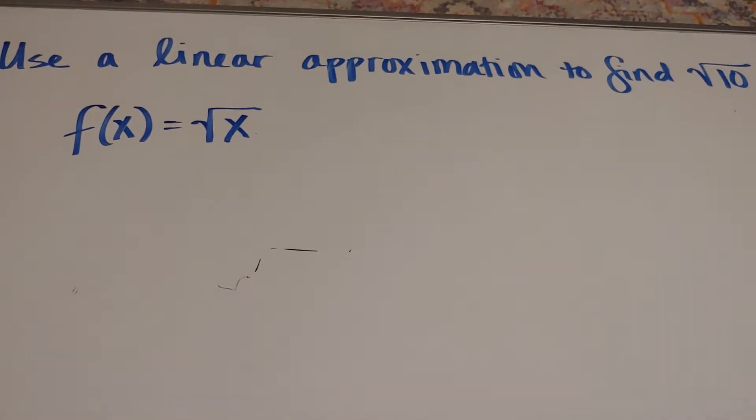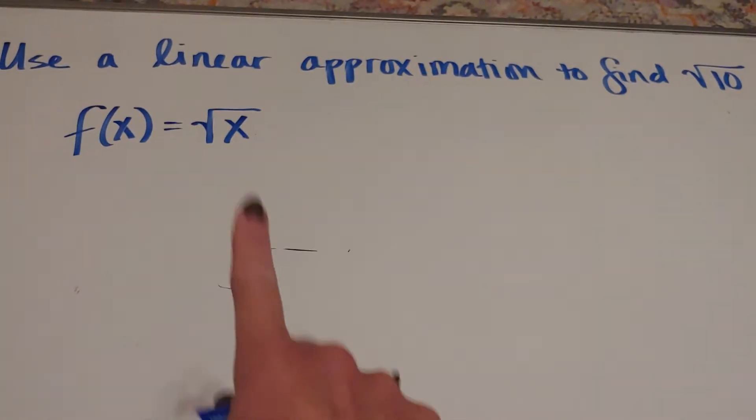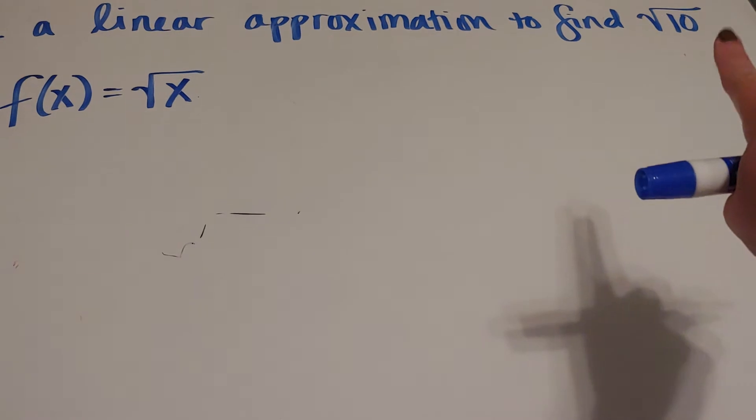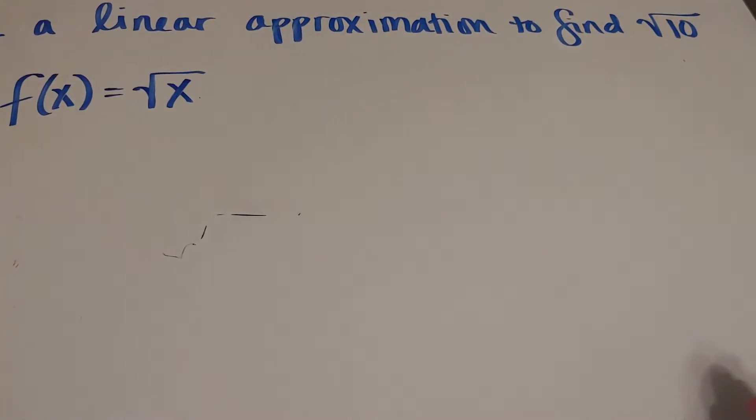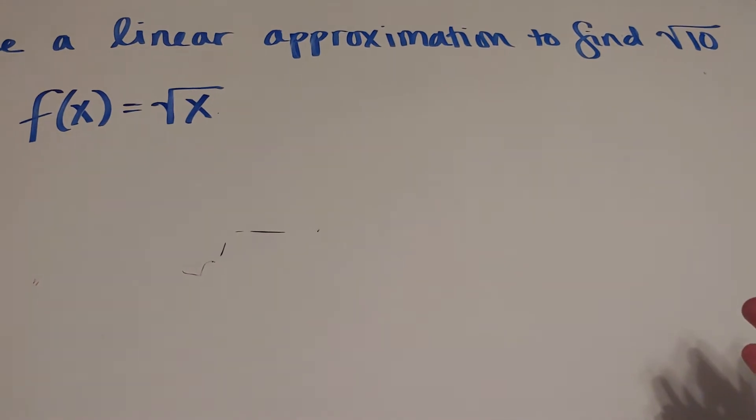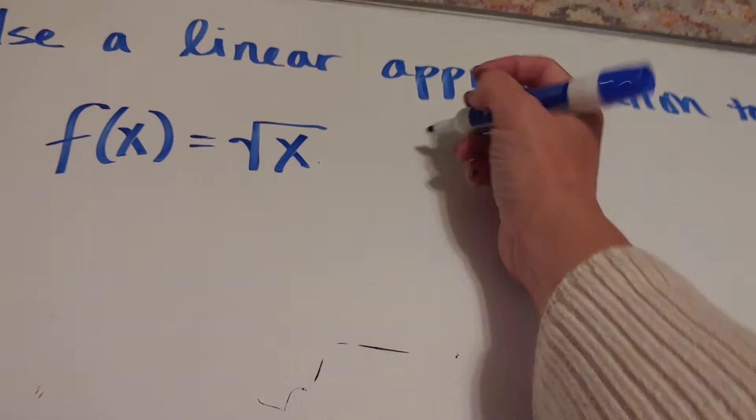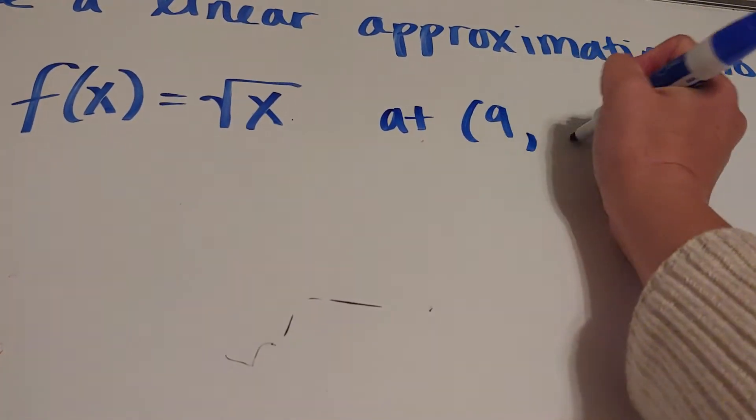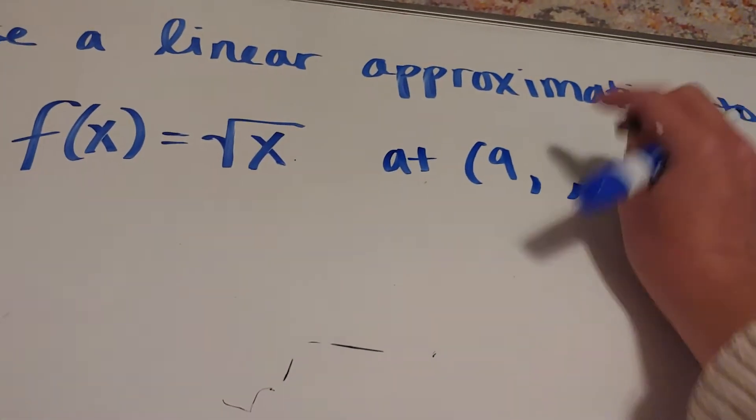The next thing is that I don't want to put this tangent line at zero or one. I want to get as close to 10 as possible that's a perfect square. So the closest perfect square to 10 is nine. We're going to put a tangent line at x equals nine. And if x is nine, the square root of nine is three.